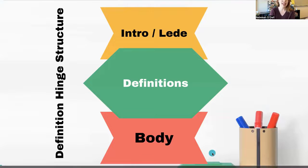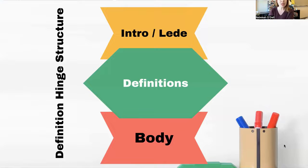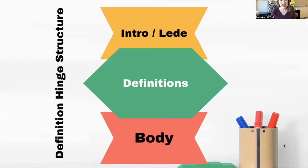The definition hinge structure is where the definition paragraph — that group of definitions that you're maybe tempted to put at the beginning of your paper — actually happens a little bit later. It serves as a hinge from the intro or the lead of your writing to the body of your writing. This is really helpful for writers because sometimes it's hard to figure out how to get from a catchy opening into the meat of your writing. Giving some important definitions can help slow things down, change the tone, and help move from introduction to body.